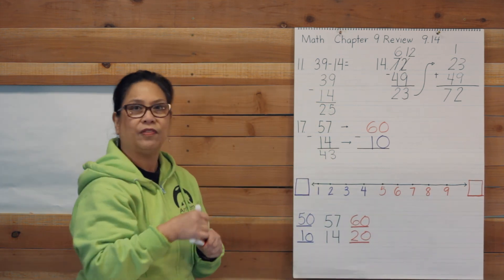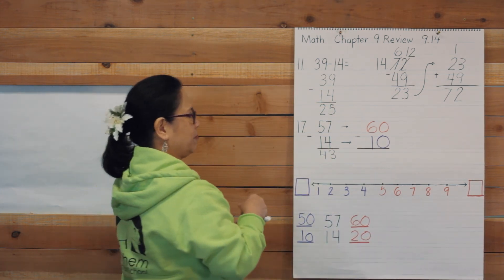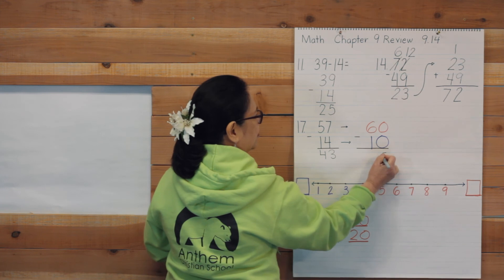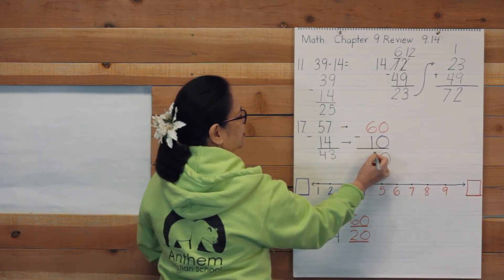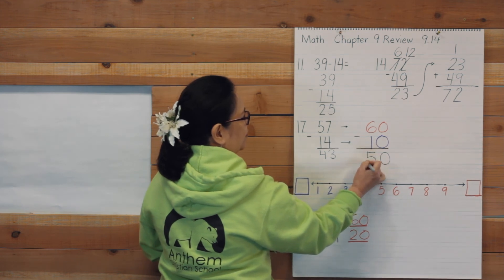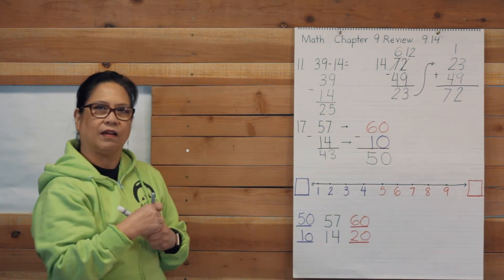Now you can solve the problem. 0 take away 0 is 0. Sorry. 6 take away 1 is 5.